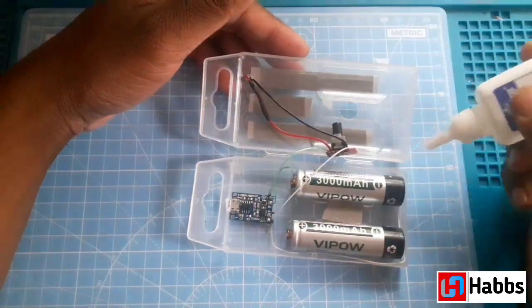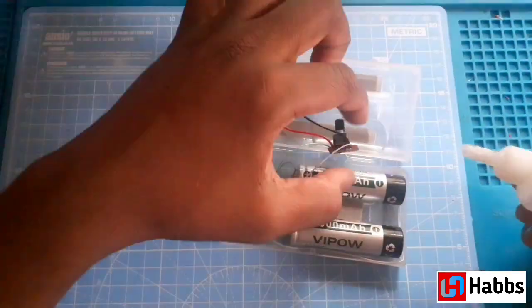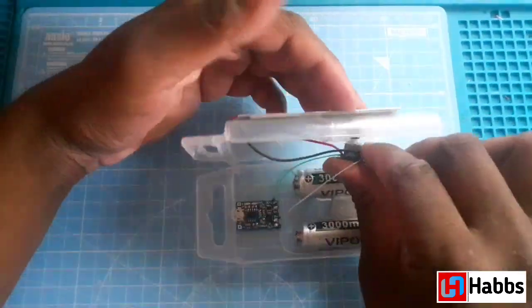We will also apply some super glue at the corner of the box so that the box closes and seals perfectly. Now our LED lamp is completely ready.